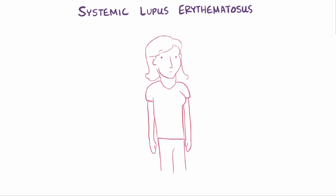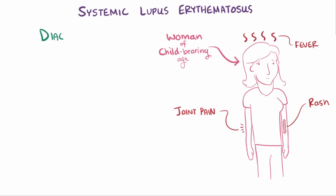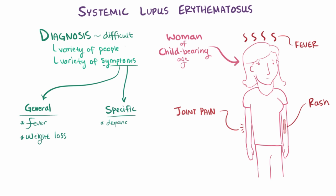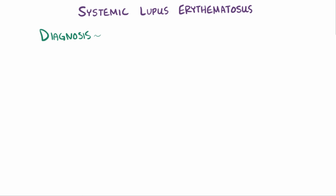The classic presentation of lupus is fever, joint pain, and a rash in a woman of childbearing age. However, diagnosis is difficult because it can affect people of different genders and ages with a wide variety of symptoms. A diagnosis requires 4 or more of 11 diagnostic criteria to be met.